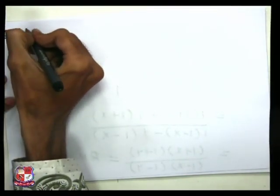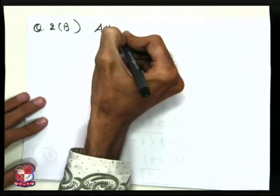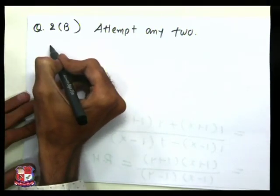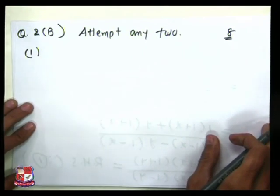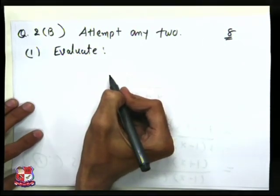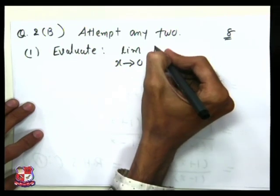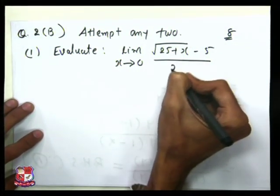Now we are going to solve question number 2B. Question 2B is attempt any 2, with 8 marks total — 4 marks for each. The first question is: evaluate the limit.